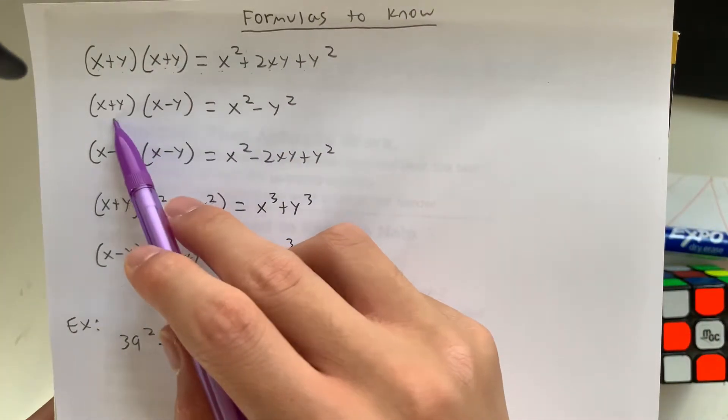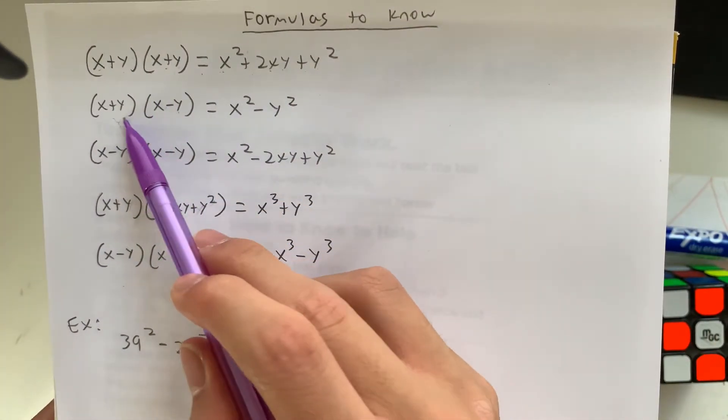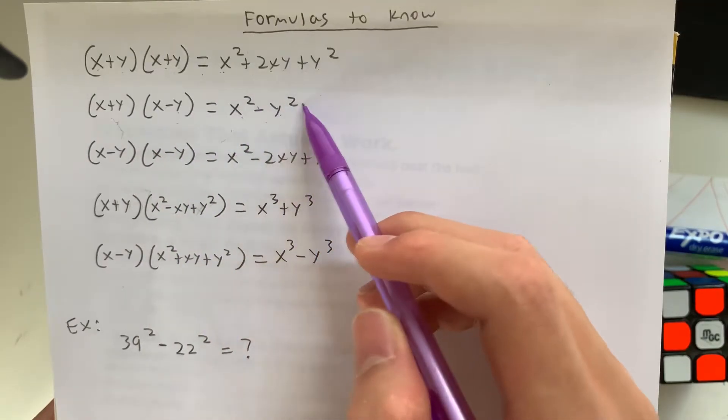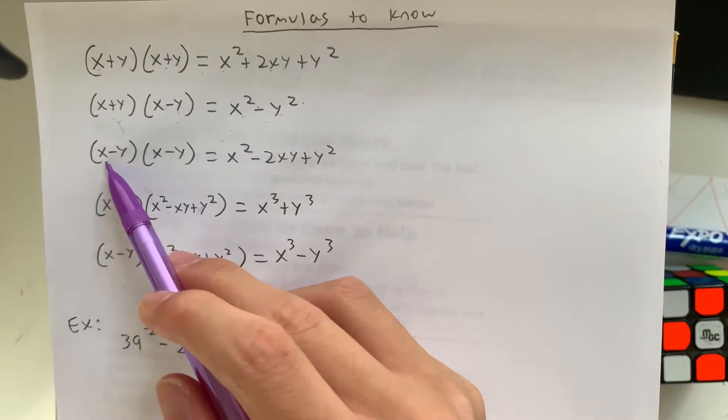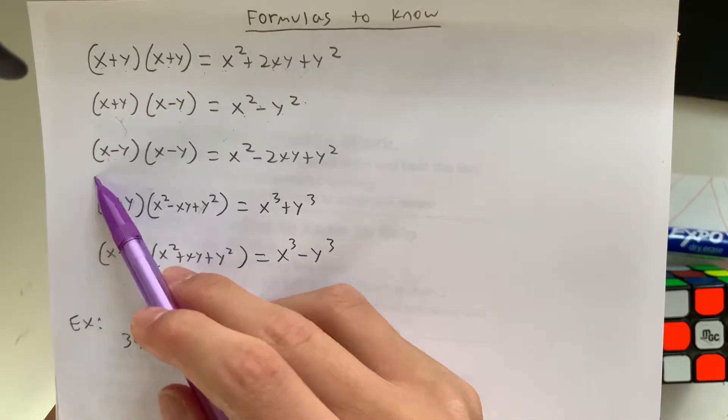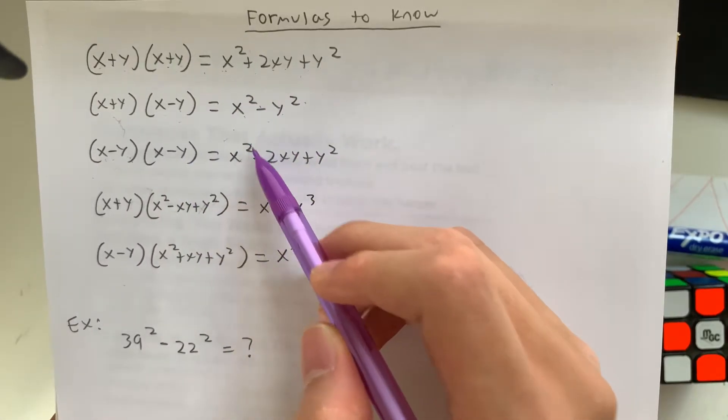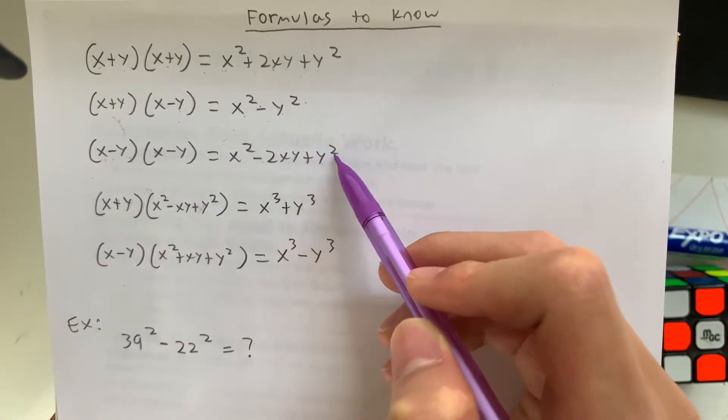Next we have the difference of squares. So we have x plus y times x minus y which equals x squared minus y squared. And next we have x minus y times x minus y which equals x squared minus 2xy plus y squared.